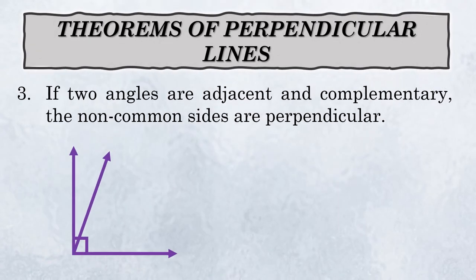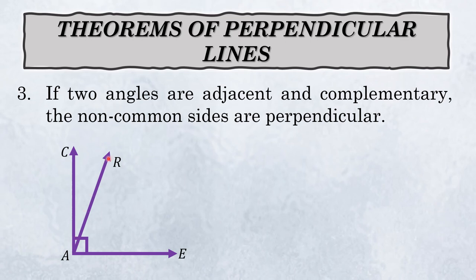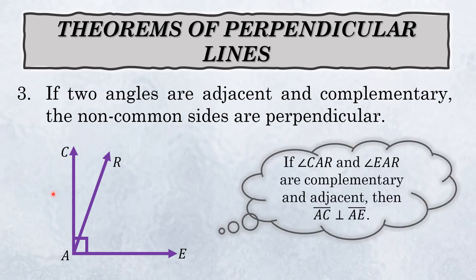The third theorem: if two angles are adjacent and complementary, then their non-common sides are perpendicular. For example, with complementary angles C, A, R and E, A, R — if the angle forms exactly 90 degrees and is divided into two adjacent angles, then if angle CAR and angle EAR are complementary and adjacent, then segment AC is perpendicular to segment AE.